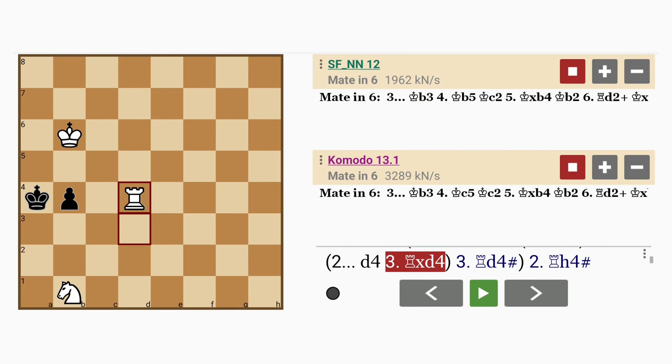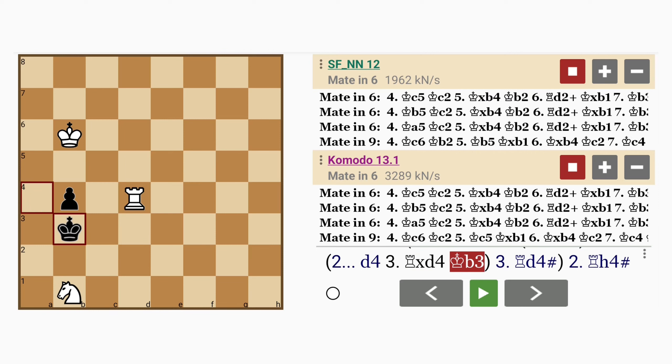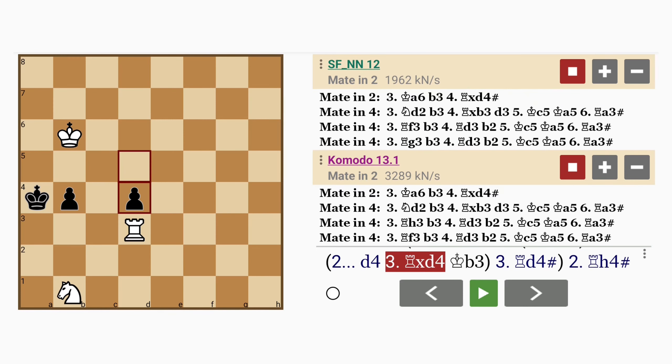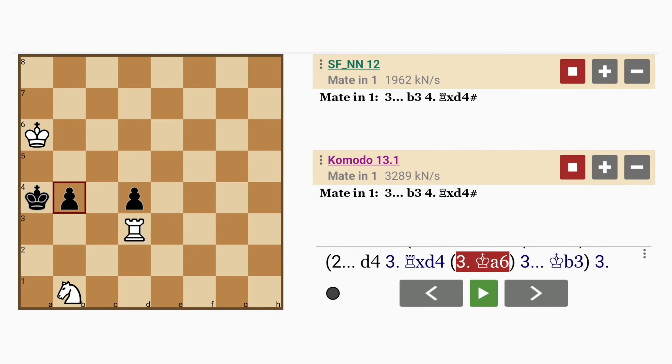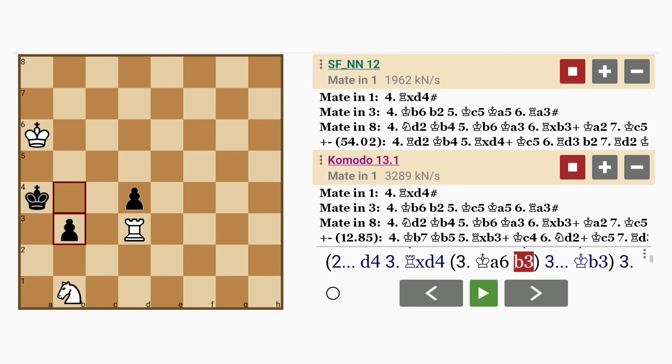And here, capturing the pawn would be a mistake, because the king can escape to b3, and this would delay the mate considerably. So, king to a6, which forces black to play b3. There's no other move. The pawn on d4 is blocked by the rook.